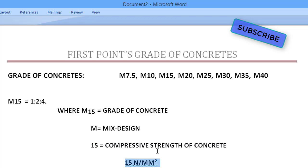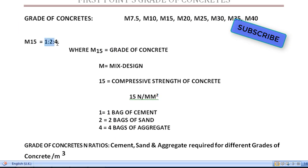M25 has a compressive strength of 25 N/mm². This is the compressive strength design for grade of concrete. The ratio 1 to 2 to 4 means: 1 bag of cement used, 2 bags of sand used, 4 bags of aggregate used. This is the ratio of M15 grade of concrete — 1 is to 2 is to 4.